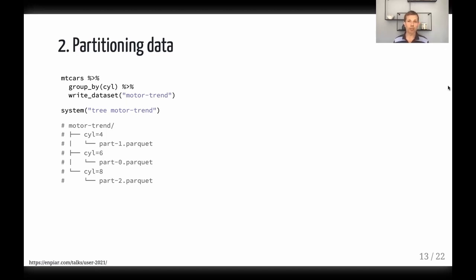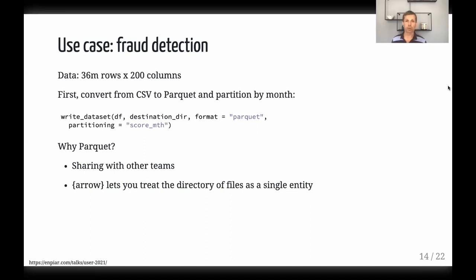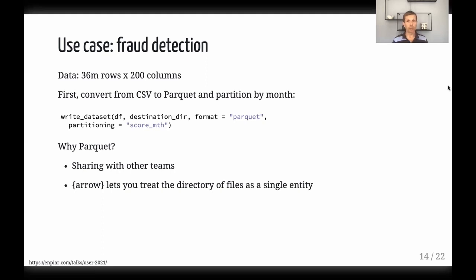With bigger data this can really pay off and make queries a lot faster. In the fraud detection space, with a dataset of millions of rows and hundreds of columns, they converted their data from CSVs to Parquet and partitioned it by month. Parquet was a good choice because they were working with data engineering and modeling teams — other teams needing access too — and Parquet is an efficient standard that Python, Java, and other ecosystems can work with.